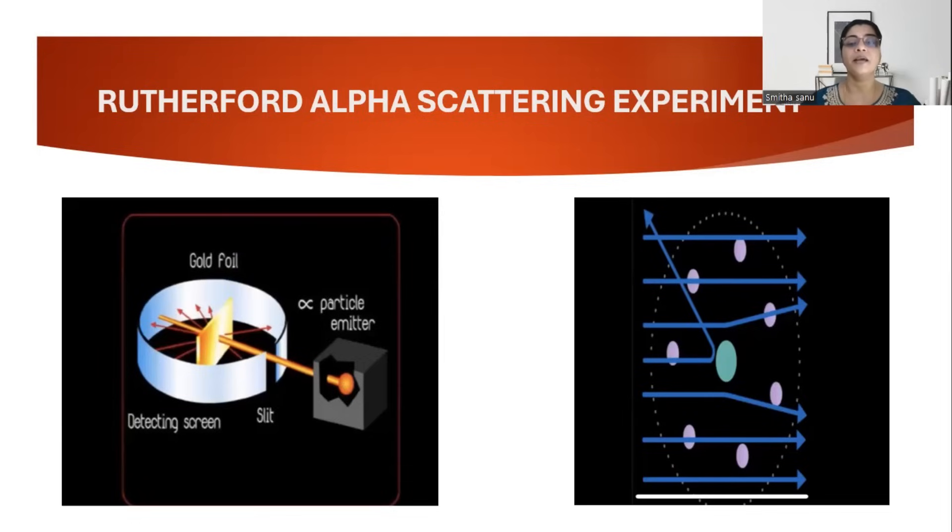If you can see the second diagram, the majority of the alpha particles went undeviated. Some of the alpha particles deviated through a very small angle, probably less than 10 degrees. And very, very few alpha particles were backscattered through an angle greater than 90 degrees, sometimes even 180 degrees.